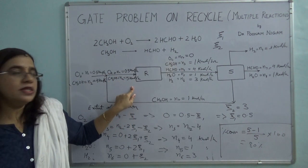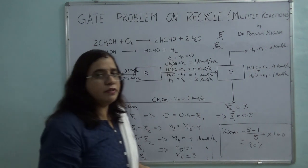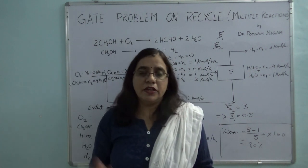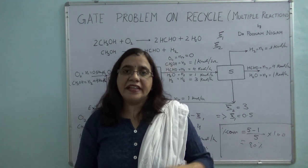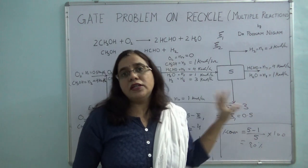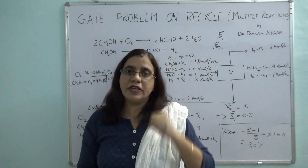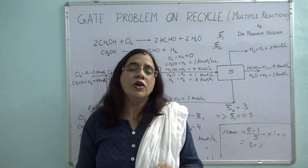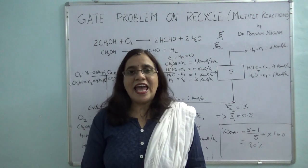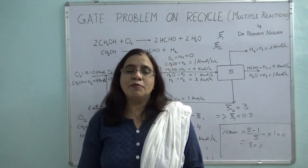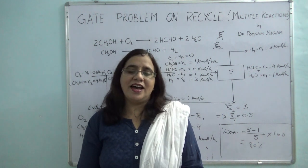So the single pass conversion is 80%. This is a straightforward problem — even though it has two reactions and the degree of freedom is nowhere initially zero, going through it systematically using what we've learned allows us to solve it. Thanks for watching; if you like the video please subscribe to the channel and hit the like button.